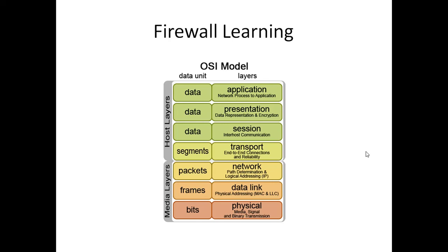With next generation firewall, you can particularly allow different types of services. For example, if you want only a particular app to be accessible from your network, you can allow that. You can allow just Facebook — if you want only Facebook to be accessible from your network, you can allow it. With next generation firewall, at the same time, you can allow only chatting features, or you can disallow chatting features in Facebook while keeping all remaining features enabled.